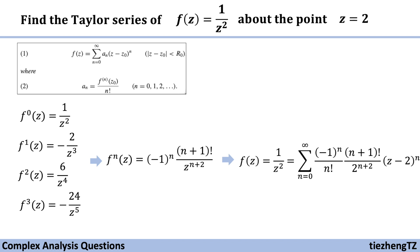So we just need to do a little bit optimization. And the Taylor series of f(z) = 1/z² about the point z = 2 is sum, n starts from 0 to infinity, (-1)ⁿ times (n+1) over 2^(n+2) times (z-2)ⁿ.